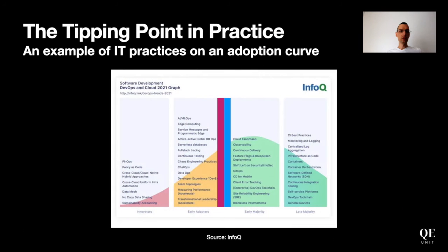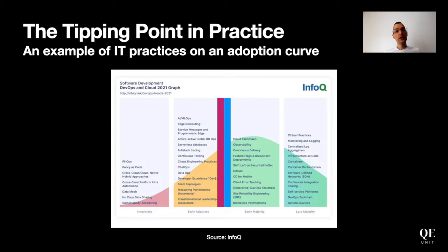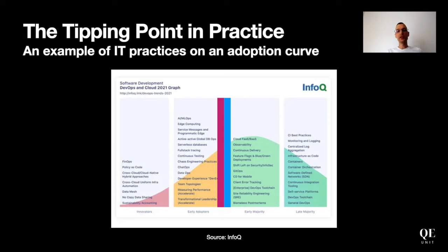Making a parallel with IT, DevOps, and quality engineering, we can apply this to adoption curves of technology. For example, using the InfoQ report on DevOps and cloud technology, we can see that the chasm is coming from the yellow category — things like continuous testing for widespread adoption, Accelerate metrics for performance measurement, and leadership transformation. These are all serious topics we discuss a lot in QA unit.